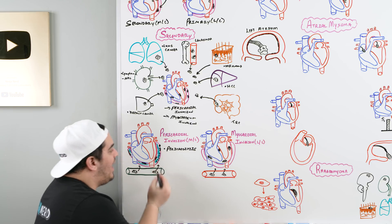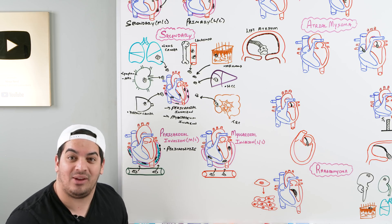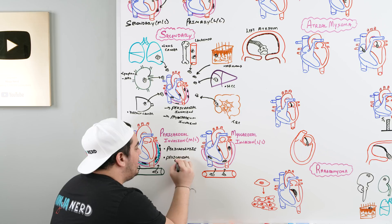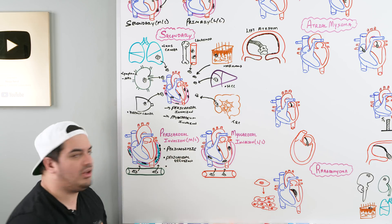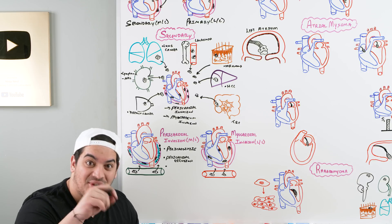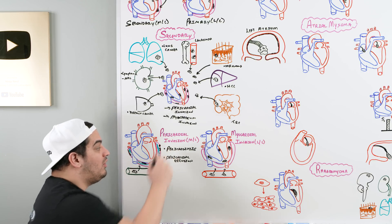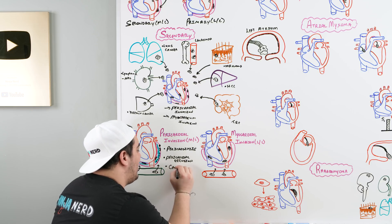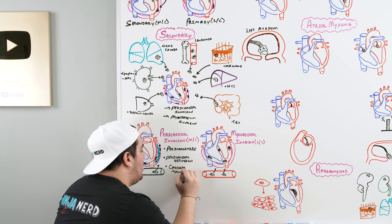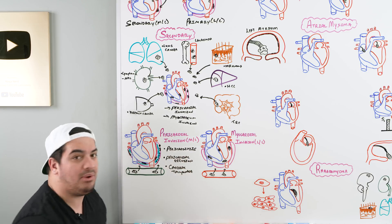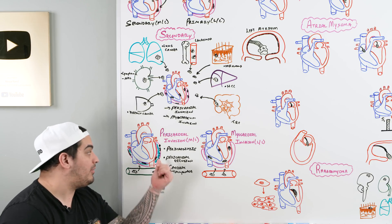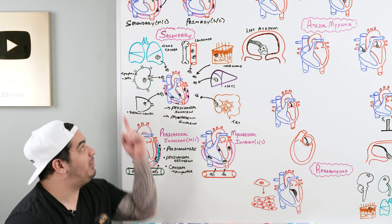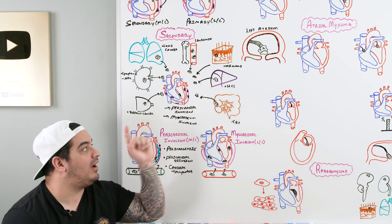Pericarditis leads to inflammation that increases serous fluid production, causing a pericardial effusion to develop within the pericardial cavity. The fluid can continue to accumulate, and vessels supplying those tumors can hemorrhage, causing a massive fluid accumulation that prevents the pericardium from stretching — squeezing the heart and resulting in the scary cardiac tamponade. If you take fluid out and send it for cytology, you're looking for malignancy.